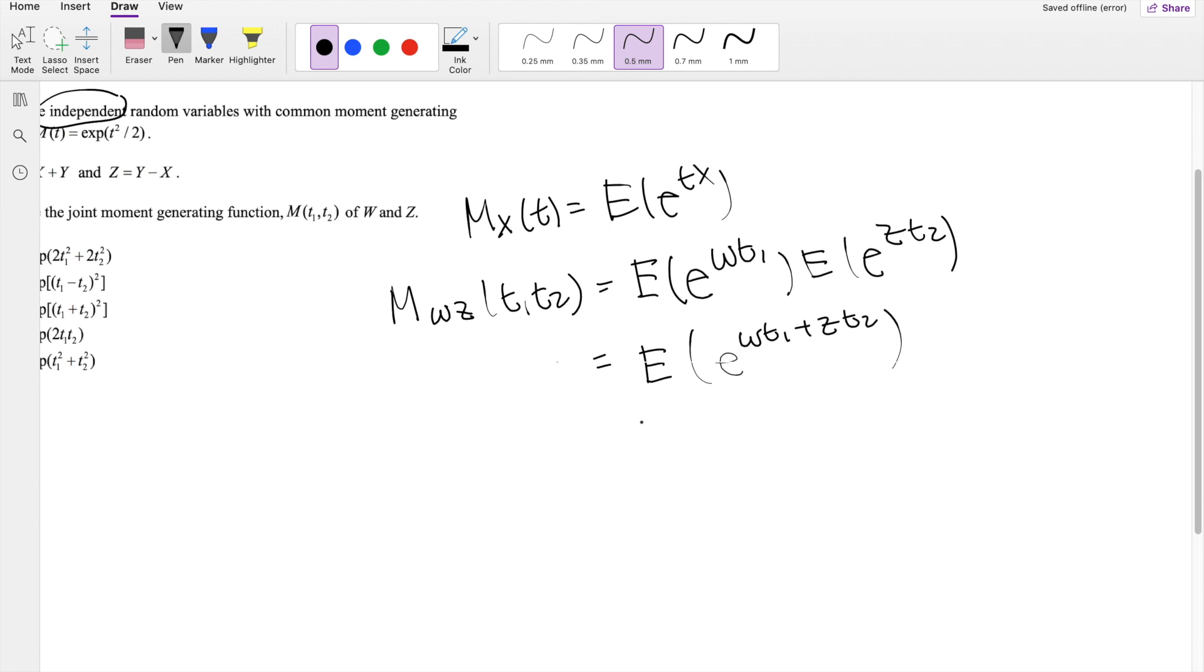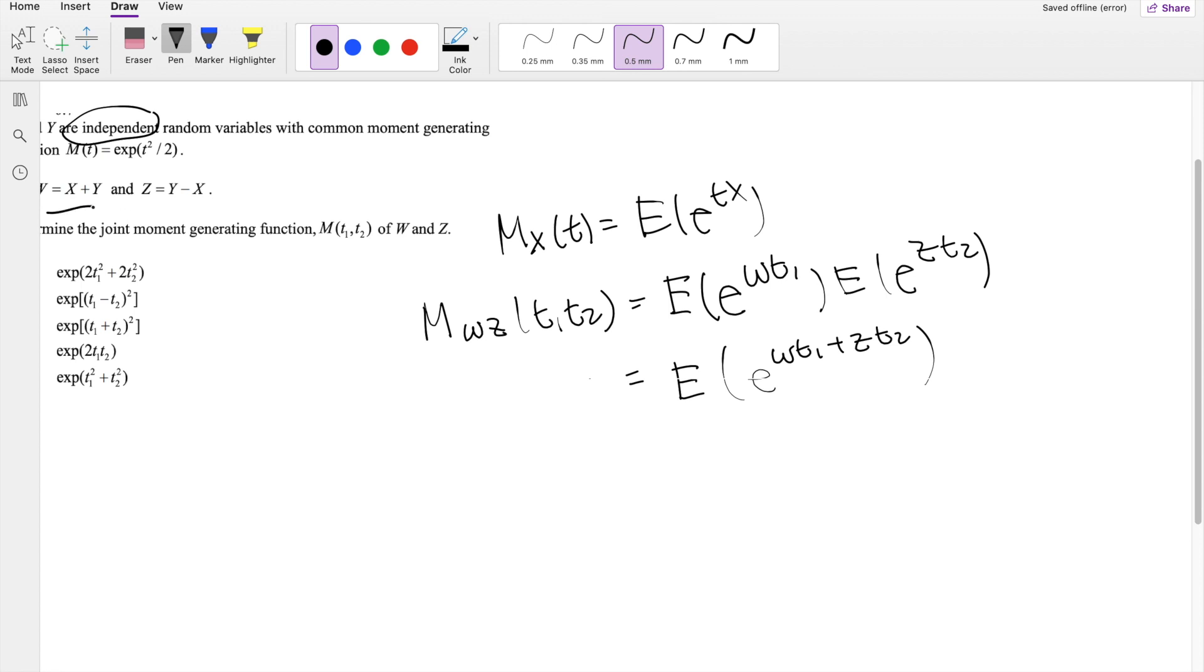Okay, so then, and we also know that W is equal to X plus Y here and Z is equal to Y minus X. So putting those in there, you get E to the T1 times X plus Y, plus T2 times Z, which is Y minus X.